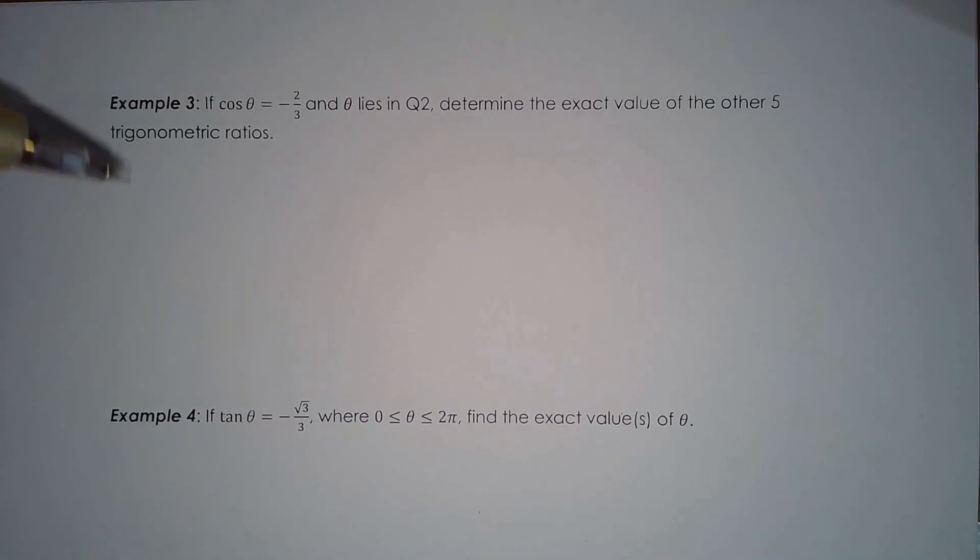Okay, so we're continuing with the special angles handout. For example 3, I'm told cos theta equals negative 2 over 3 and theta lies in quadrant 2.